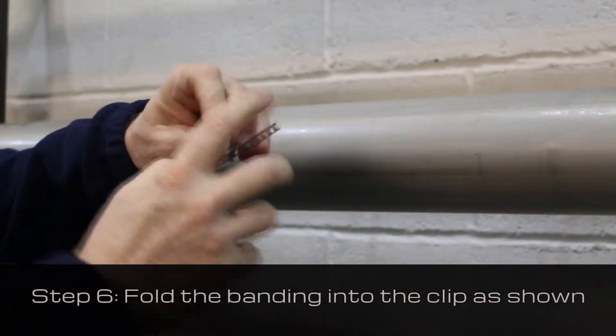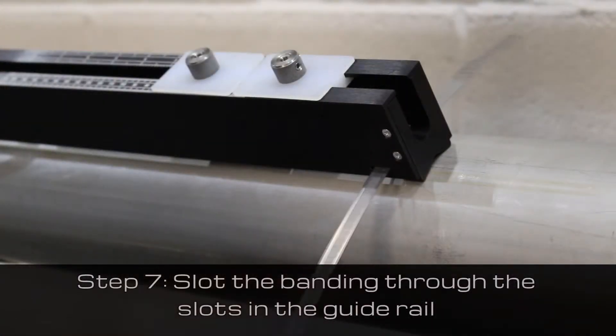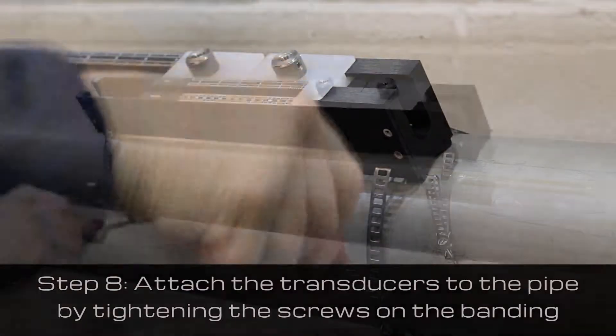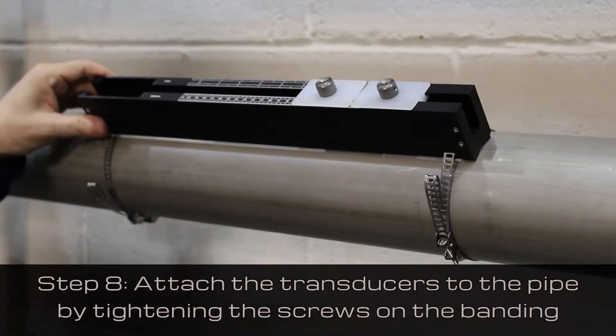Next, fold the banding into the clip as shown. Slot the banding through the slots in the guide rail. Then attach the transducers to the pipe by tightening the screws on the banding.